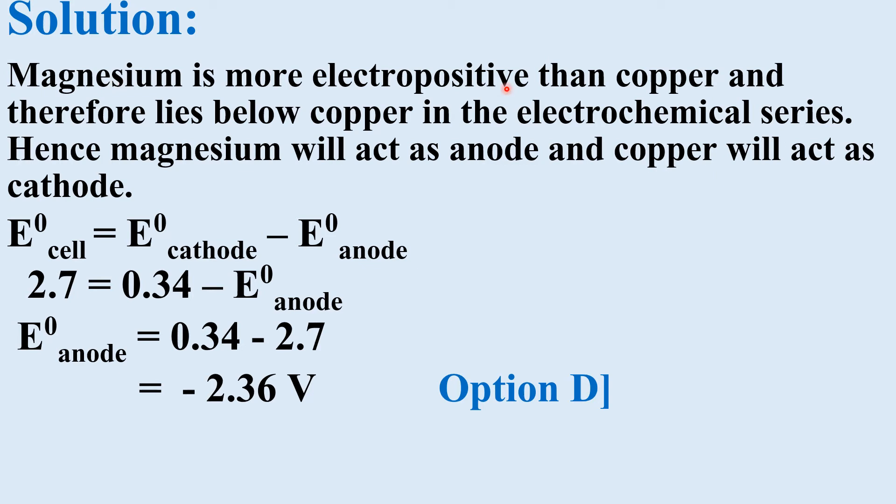Magnesium is more electropositive than copper and therefore lies below copper in the electrochemical series. Hence, magnesium will act as anode and copper will act as cathode.